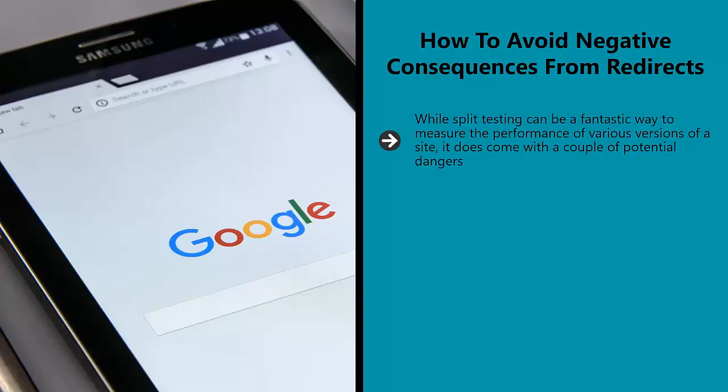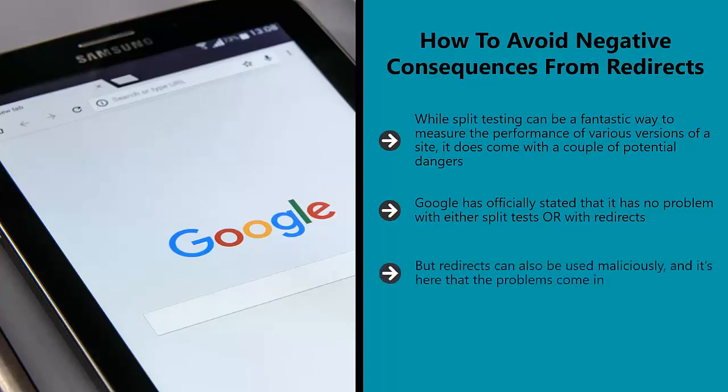Google has officially stated that it has no problem with either split tests or with redirects. In fact, redirects are commonly used in a variety of other scenarios — they are necessary for many e-commerce tools, for example, and also used to mask URLs for affiliate marketers. But redirects can also be used maliciously, and it's here that the problems come in.